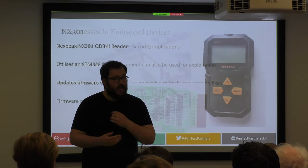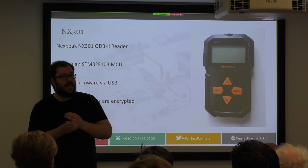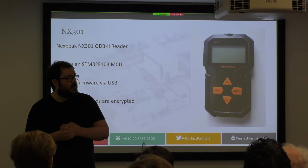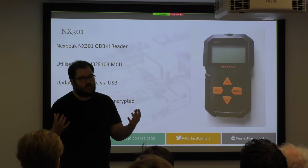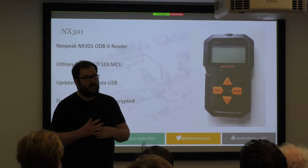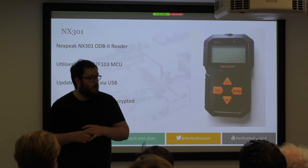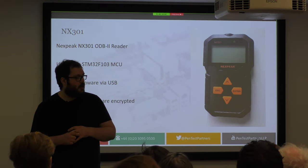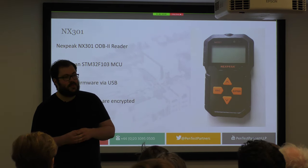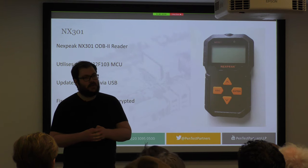Here's my first example: the NX301 ODB2 reader. This is an ODB2 reader I bought off Amazon for £20, but it has a few mechanisms in it that would make it a really good target for an attacker. Firstly, it's using an STM32-F10...